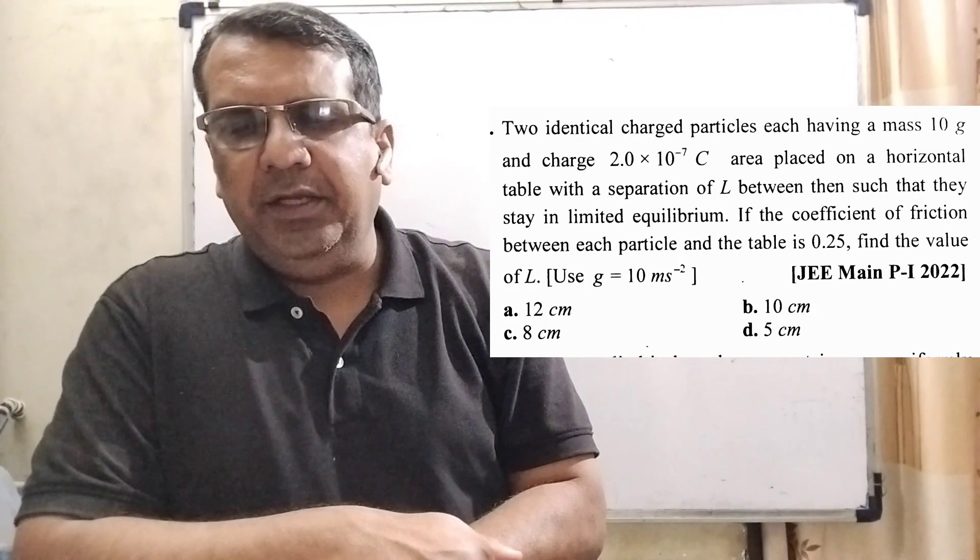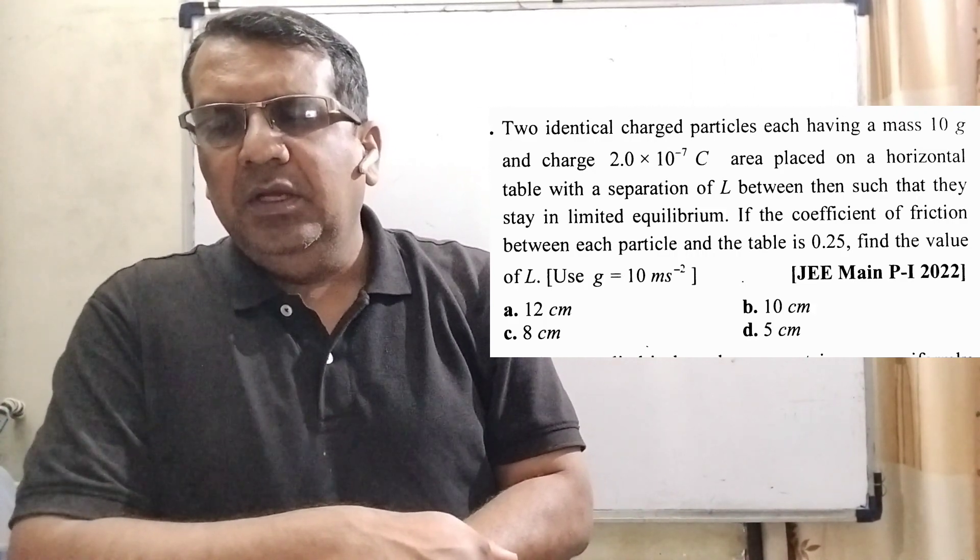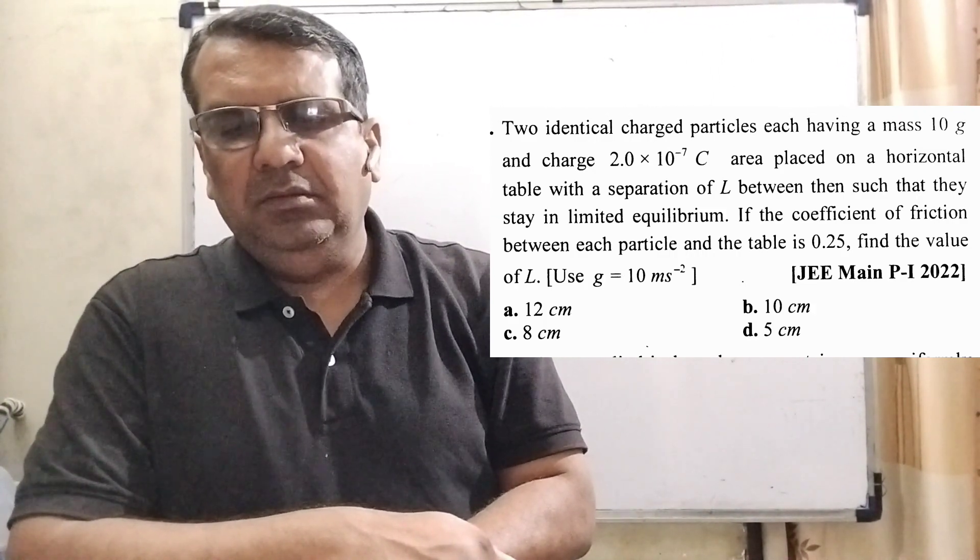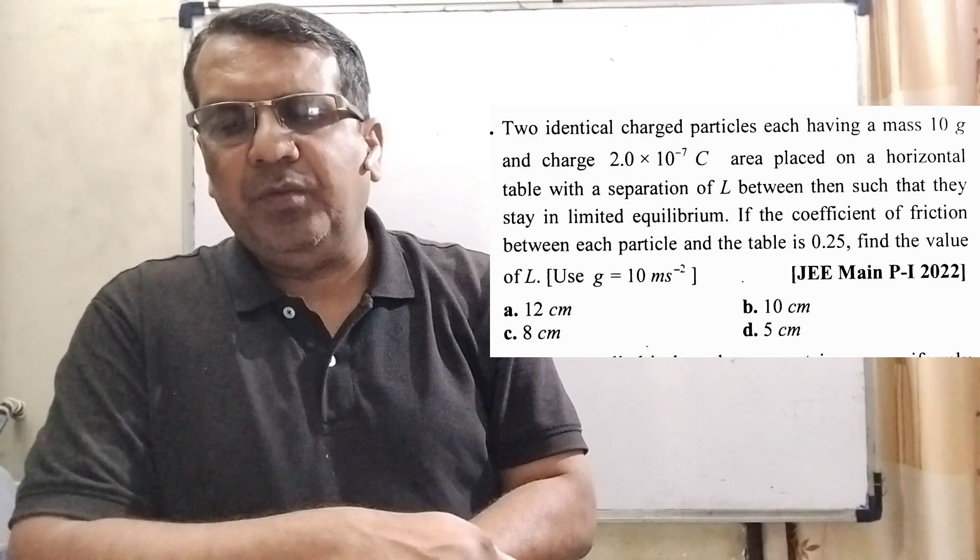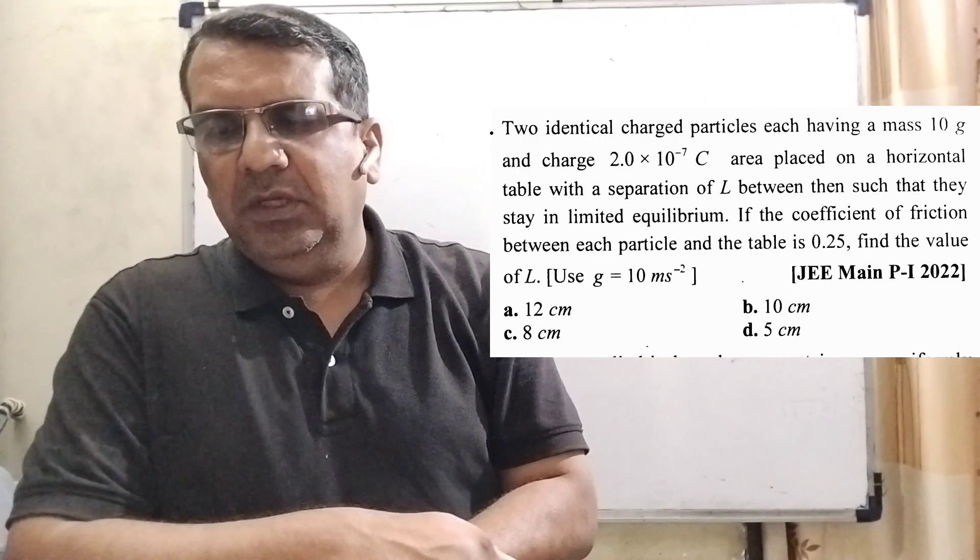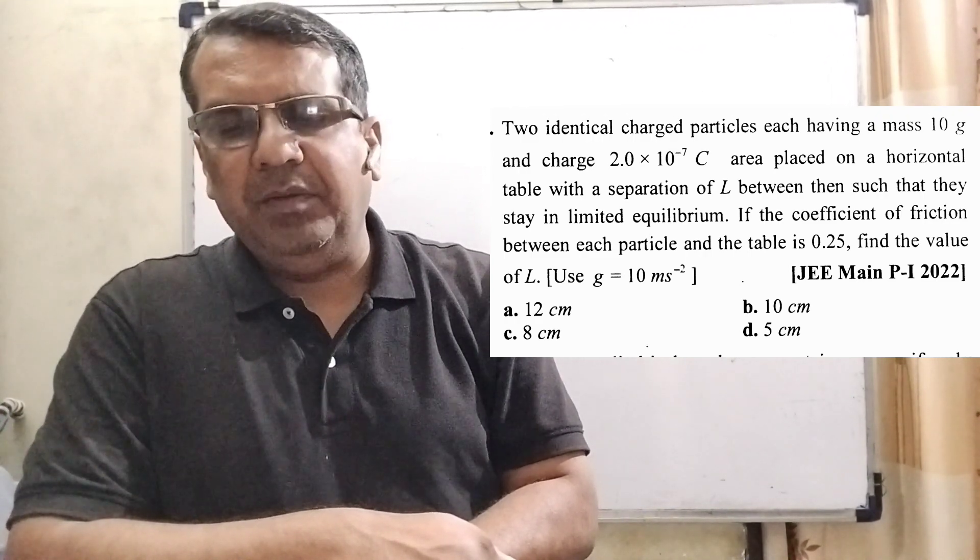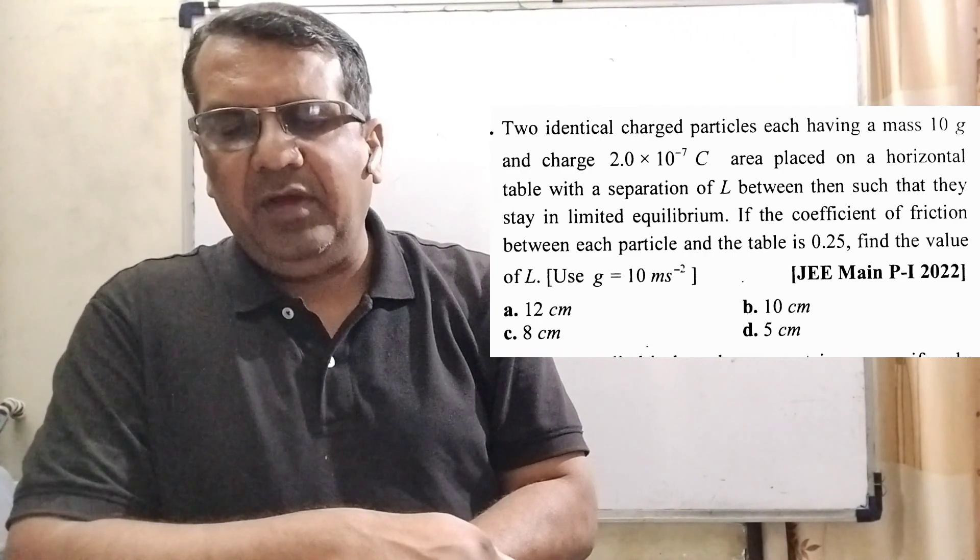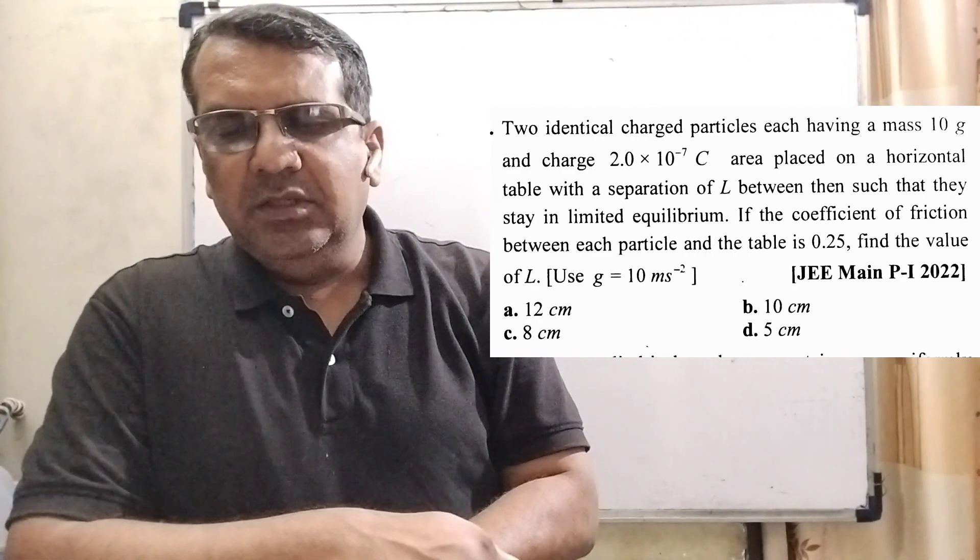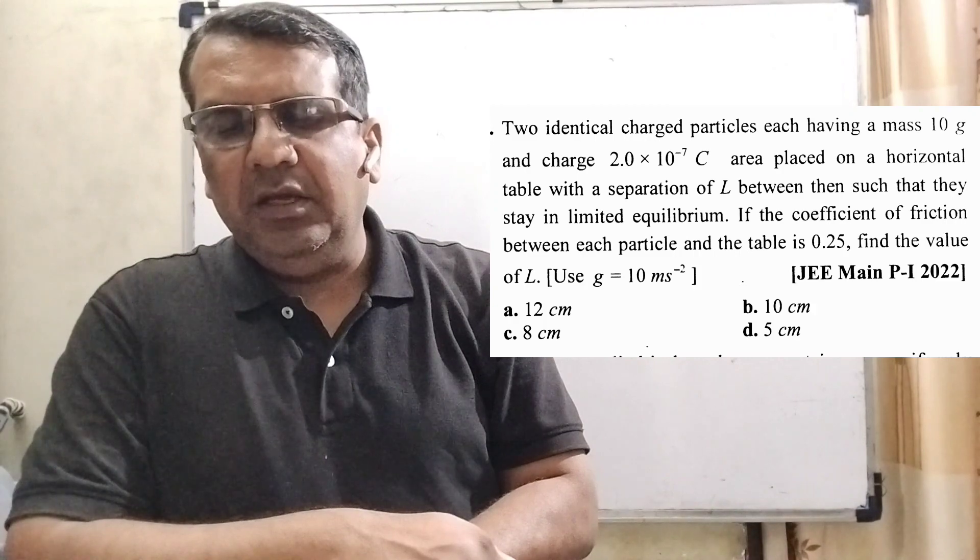Now here is the question. Consider two identical charged particles, each having a mass m gram and charge 2×10⁻⁷ Coulomb, placed on a horizontal table with separation L between them such that they stay in limiting equilibrium.